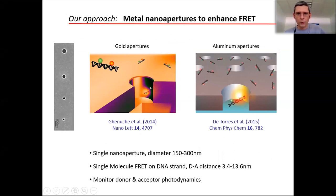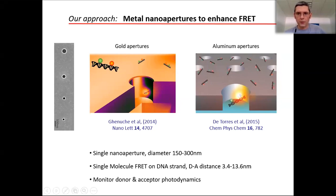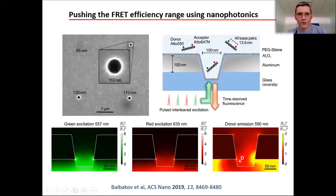Our preferred experimental system is metal nano holes — circular nano holes milled in gold or aluminum. We prefer aluminum because it is more broadband for the visible. We play with green and red fluorescent dyes, so aluminum matches better than gold, which is good in the red but bad in the green. We place DNA molecules inside these nano holes. The DNA is designed so that there is one donor and one acceptor at a well-specified distance, controlled by DNA synthesis.